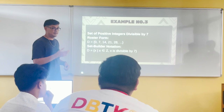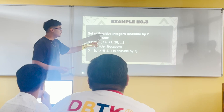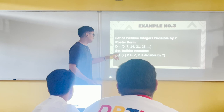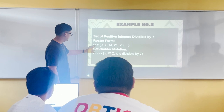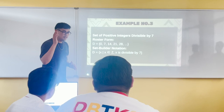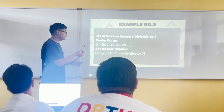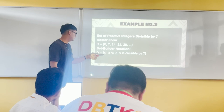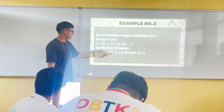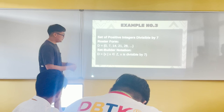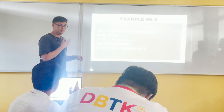Now, a set of positive integers divisible by 7. It did not say when it ends, so we will write down the elements using an ellipsis since we cannot list them all. Set D = {0, 7, 14, 21, 28, ...} — all positive multiples of 7 up to infinity. The set builder notation is: set D = {x | x ∈ Z, x is divisible by 7}. There is no upper bound; the condition is simply divisible by 7.